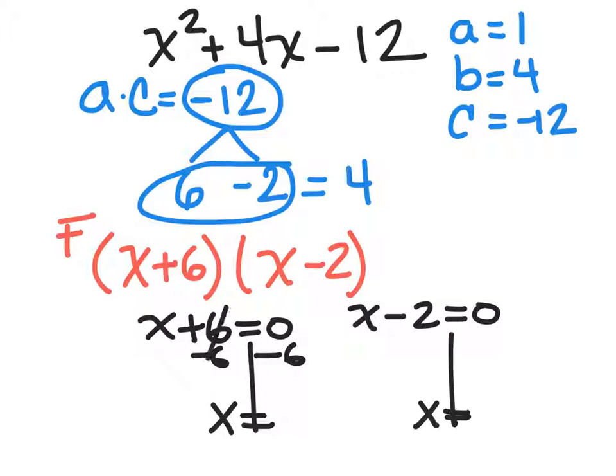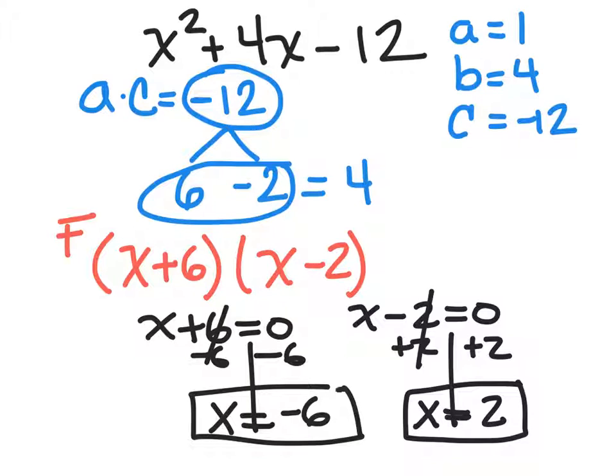Minus 6, minus 6, those cancel. I get negative 6. Plus 2, plus 2, those cancel. I end up with a 2. These are my roots.